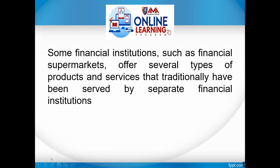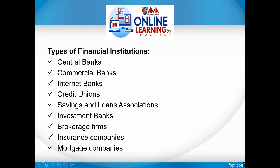Some financial institutions, such as financial supermarkets, offer several types of products and services that traditionally have been served by separate institutions. There are nine basic types of financial institutions: central banks, commercial banks, internet banks, credit unions, savings and loan associations, investment banks, brokerage firms, insurance companies, and mortgage companies.